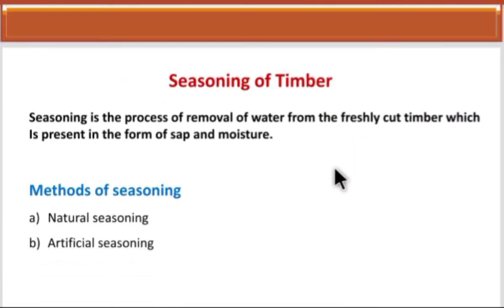Next comes seasoning of timber. Seasoning is the process of removal of moisture from the timber — the process of removal of water from freshly cut timber. We do seasoning of timber to increase its strength. If we remove the moisture from the timber, it will get strength as well as durability. So seasoning has to be done very carefully.